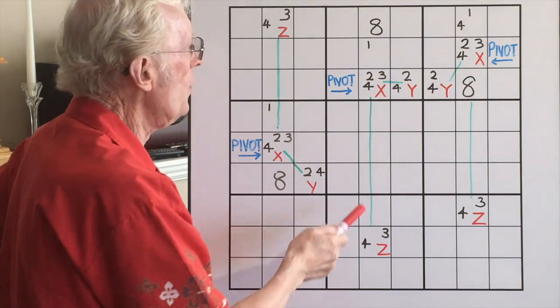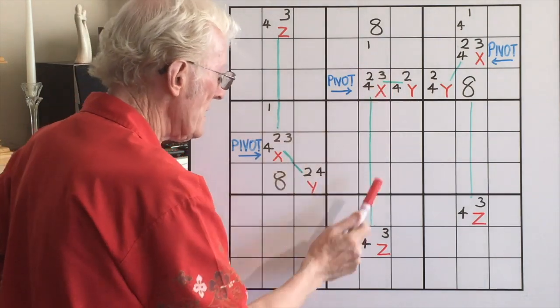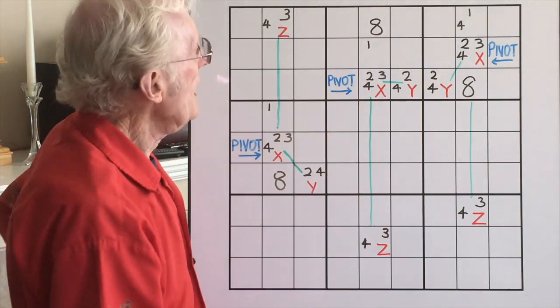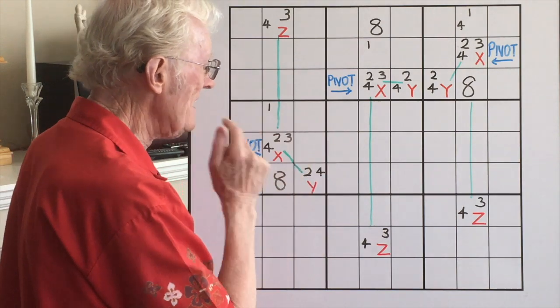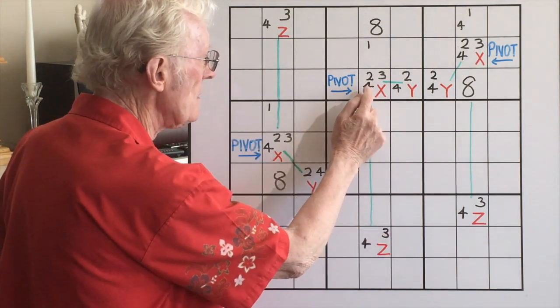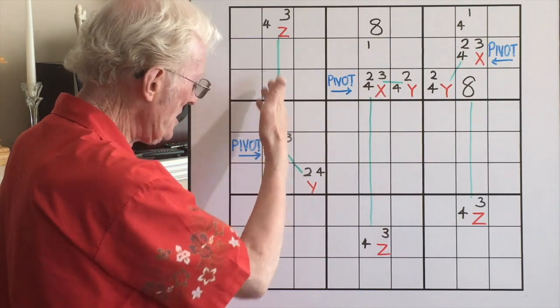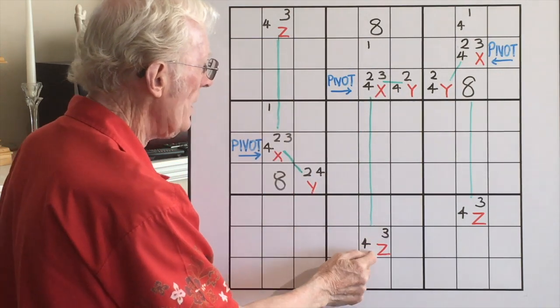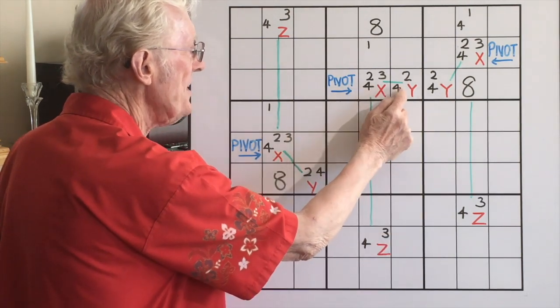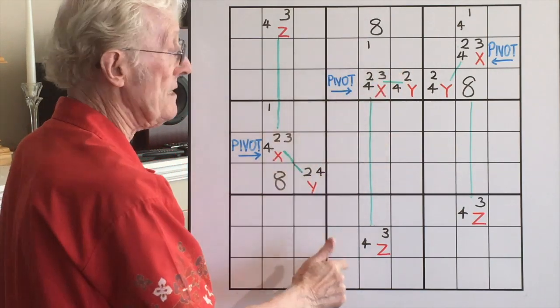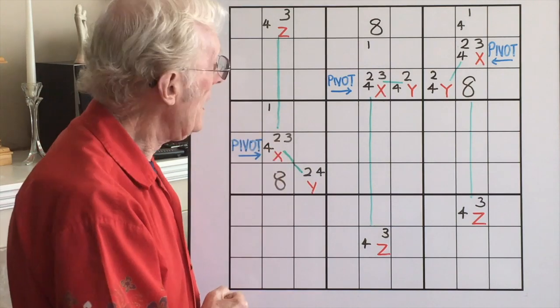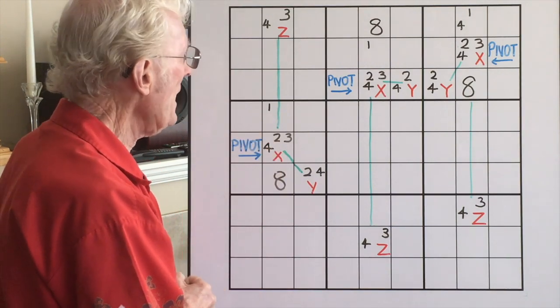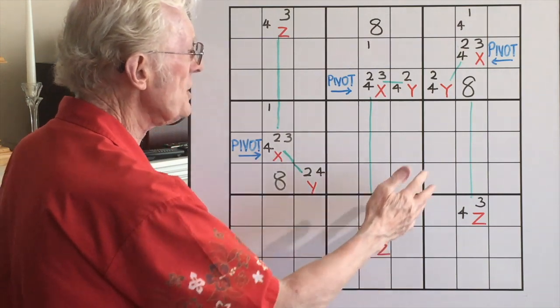This is very important. When you're looking for an X, Y, Z, you are looking for a number which is repeated in each one of these cells. I forgot to mention that over here. This four is there, there, and there. It's in X, Y, and Z. And that's what makes up the XYZ wing, as they call it.